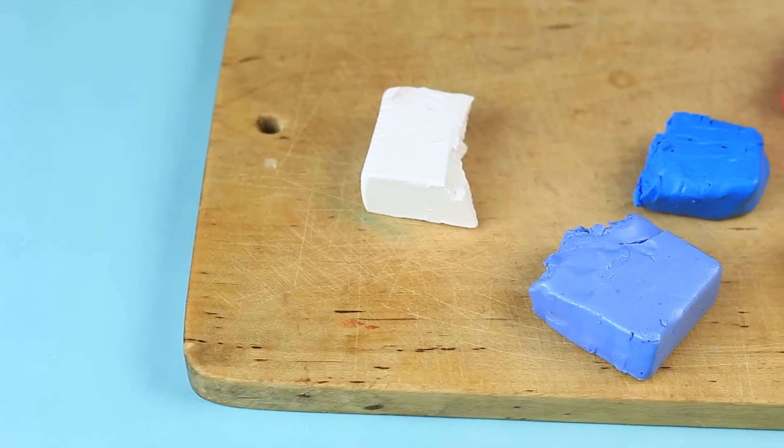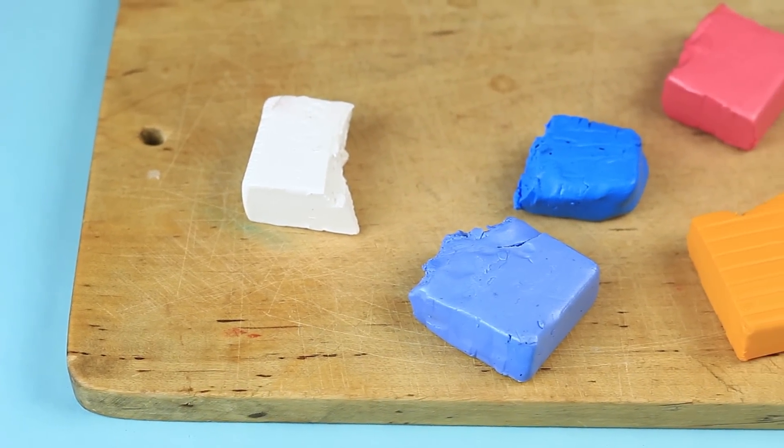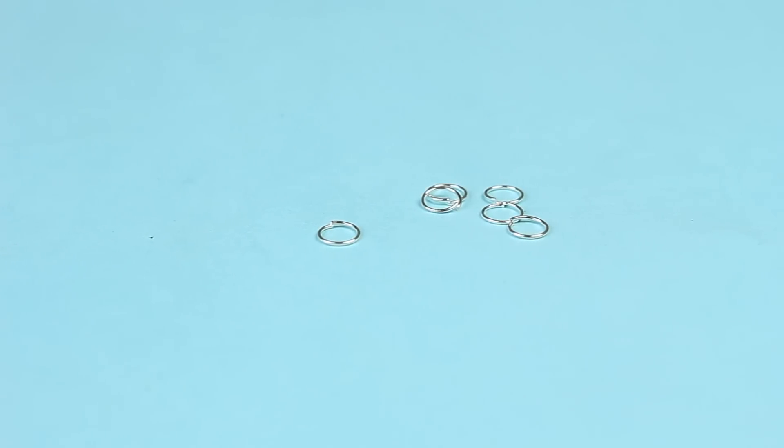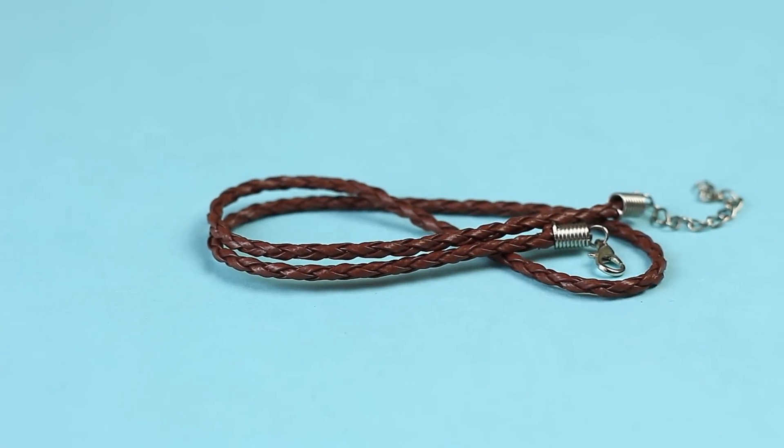To make a fingerprint pendant we'll need polymer clay of white, two shades of blue, ochre, pink, and green color, jump rings, and braided leather cord with a clasp.